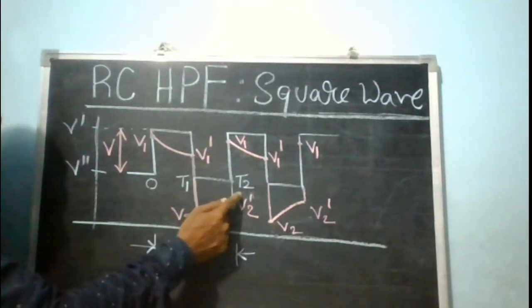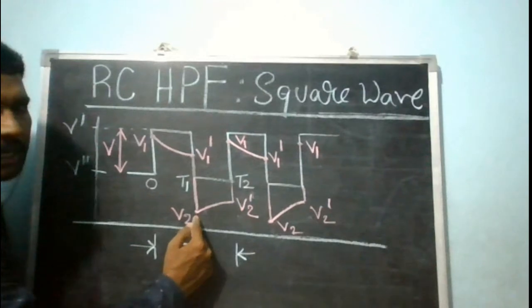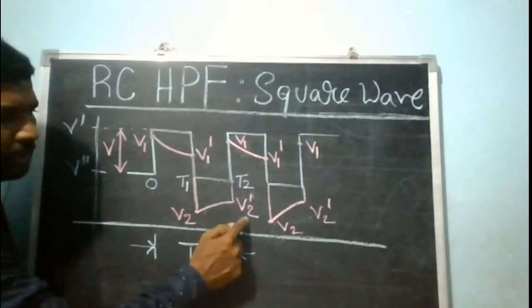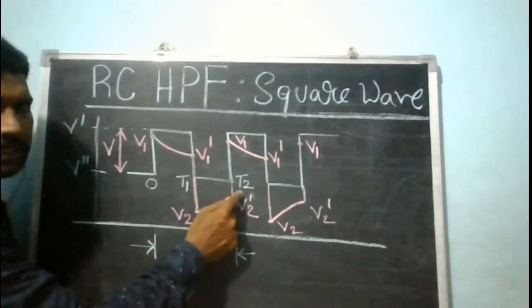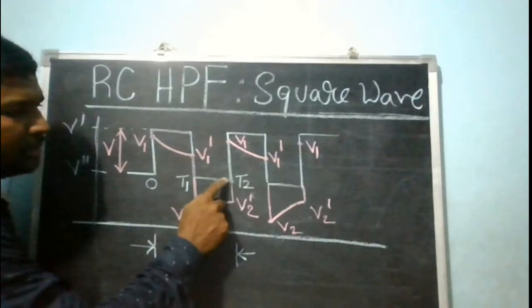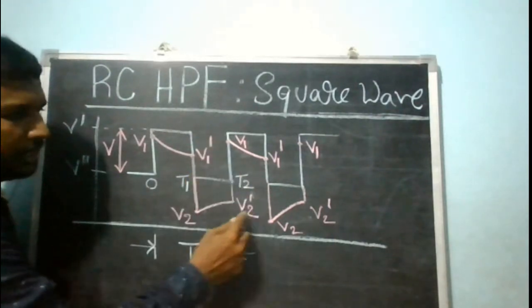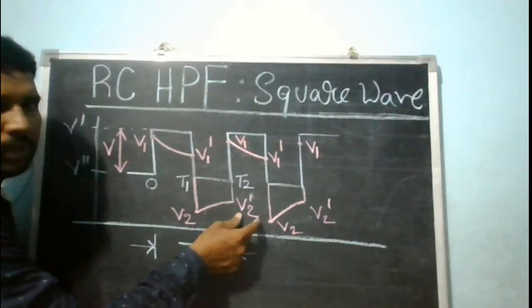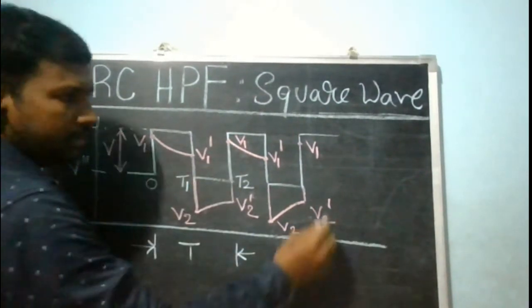Between T1 and T2, the input is again a constant step input, so the output takes a standard discharge equation. At t = T2, the output is denoted V2'. At T2+, the input suddenly changes from V'' to V', so because of the change in input by capital V, there should be a corresponding change in output. Therefore V2' + V gives V1.